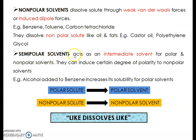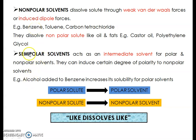The third category is semi-polar solvents. Semi-polar solvents act as intermediate solvents — they themselves do not act as a primary solvent, but they help as intermediates between polar and non-polar solvents. If semi-polar solvents are added to non-polar solvents, the solubility of the non-polar solvent increases, as they can induce a certain degree of polarity. For example, alcohol is a semi-polar solvent; adding alcohol to benzene increases benzene's solubility for polar solvents. Semi-polar solvents are used to improve the solubility parameter of non-polar solvents.